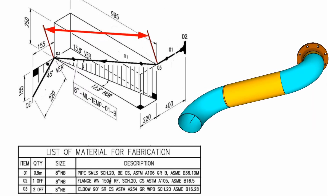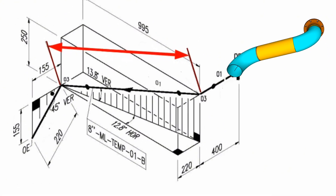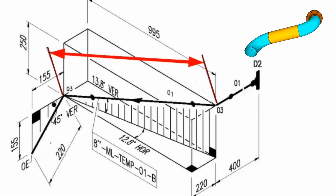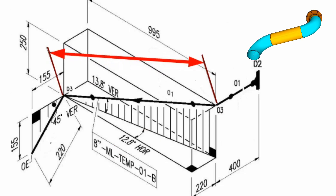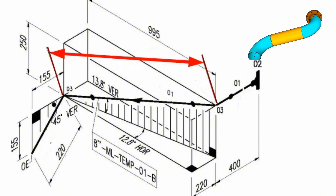Let's start the piping tutorial video. As you can see in this pipeline, there are rotations of both 12.8 degrees horizontally and 13.8 degrees vertically. After these turns, we need to find the distance between the two elbows.